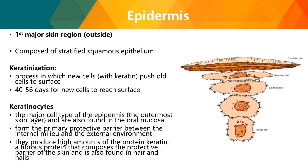The epidermis is the first major skin region found outside your body. It is composed of keratinized stratified squamous epithelium, and it prevents water loss and resists abrasion. It is composed of distinct layers called strata. The cells of the deepest strata perform mitosis and initiate keratinization, where new cells with keratin push old cells to the surface where they slough off. It may take 40 to 56 days for new cells to reach the surface. The major cell types are keratinocytes, also found in the oral mucosa.